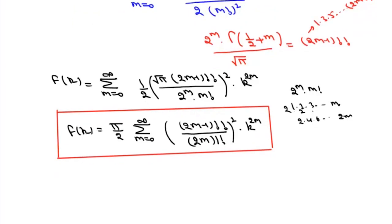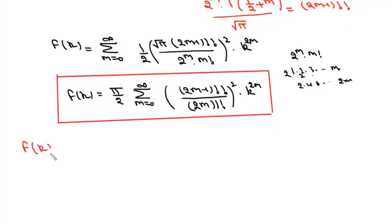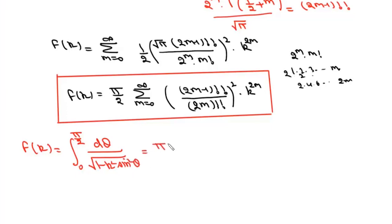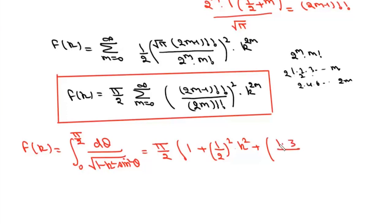We can write F(k) in expanded form. F(k), which is the integral from 0 to pi/2 of d-theta over sqrt(1 minus k squared sin squared theta), equals pi/2 times [1 plus (1/2)^2 times k^2 plus (1 times 3 over 2 times 4)^2 times k^4 plus ...], where for m=0 the term is 1, for m=1 it gives (1/2)^2 k^2, and for m=2 the double factorial 3!! equals 1 times 3 and double factorial 4!! equals 2 times 4. The series continues to infinity.